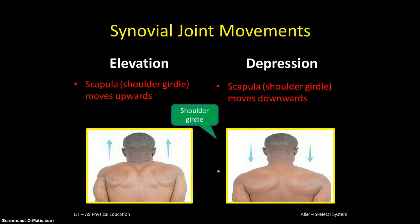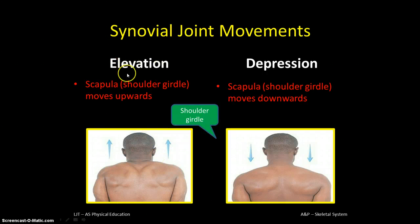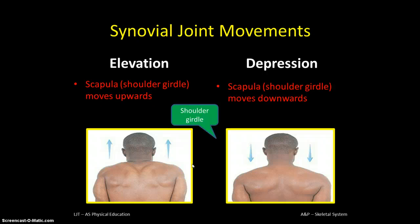Two movements you see quite often: elevation and depression. When you shrug your shoulders upward, pulling the scapula and shoulder girdle up, that's elevation. When you lower your scapula or shoulder girdle, that's depression. This is purely a shoulder girdle movement. It's quite easy to remember — you elevate going up, and depress going down.